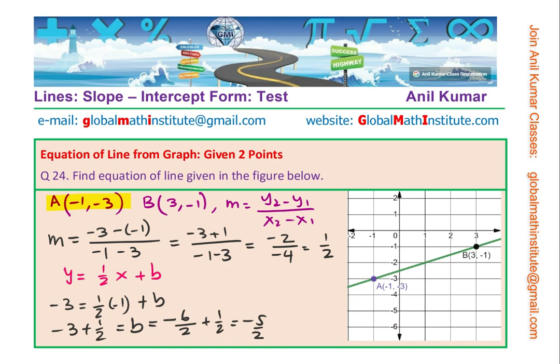And therefore, we can write down the equation of the line as y equals to the gradient of half x minus 5 by 2. Make sense? So that is how we can get the equation.